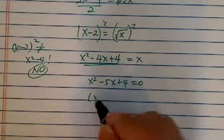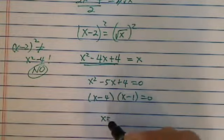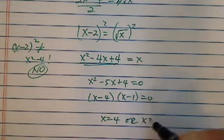So from there, it's pretty easy. I'm just going to factor it, minus 4 minus 1. So x equal to 4 or x equal to 1.